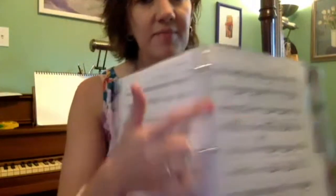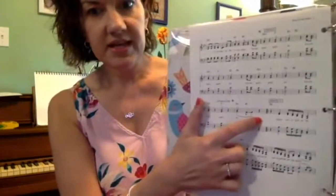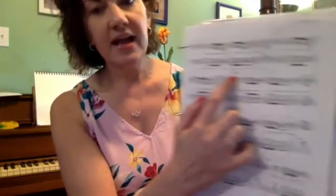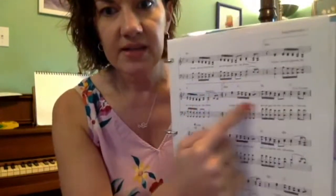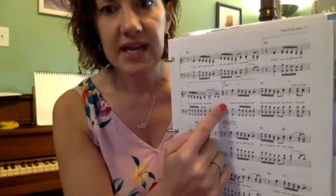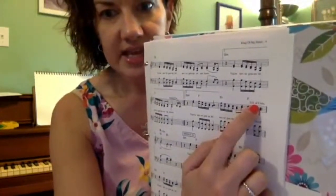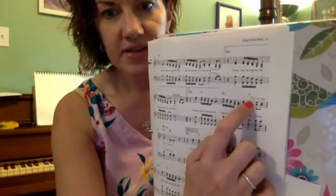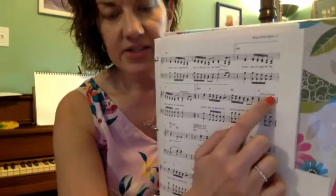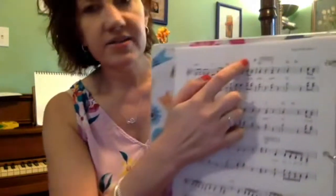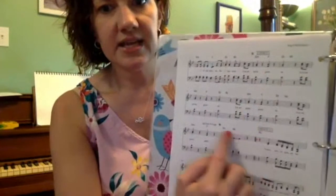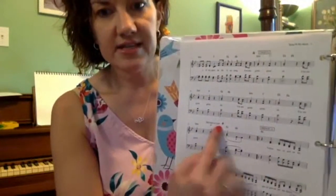Then you go back to the repeat sign, do that whole thing again, and when you get here it's your second time through — so you go to the second ending. We see D.S. al Coda, which means go back to the segno sign and sing until you get to the coda. Go back to the sign here, then sing until we get to the little bullseye, which tells us to go to the coda.